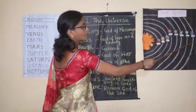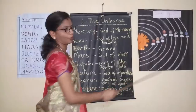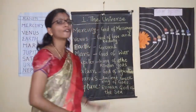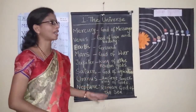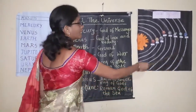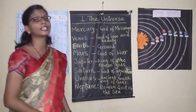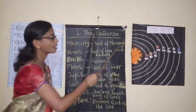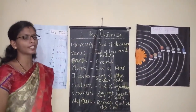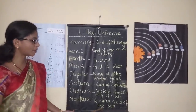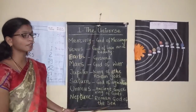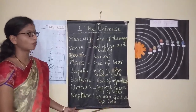The last, 8th planet in the solar system is Neptune. It is the 8th planet as well as the 4th largest planet of the solar system. This planet takes nearly 165 years to complete one revolution around the sun. It is named after the Roman god of the sea.